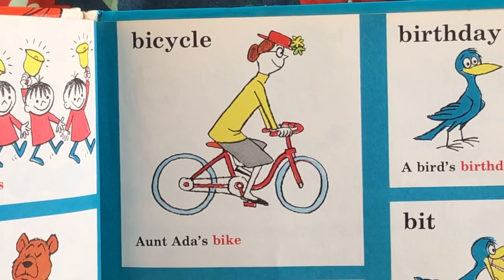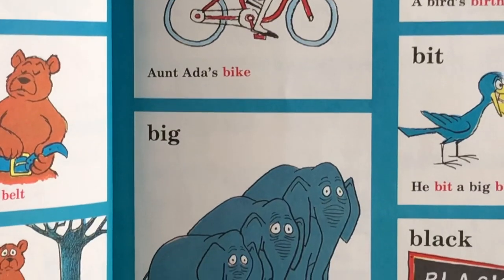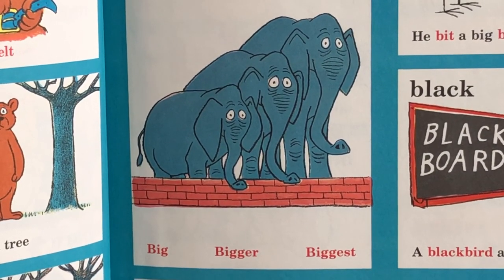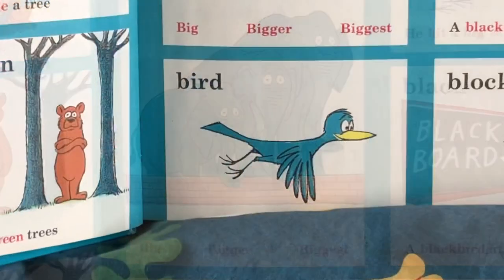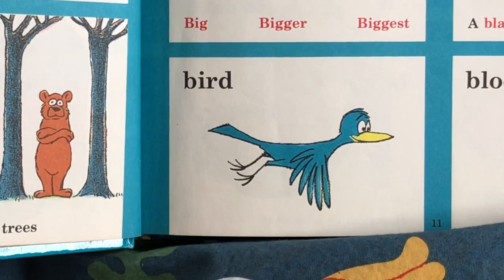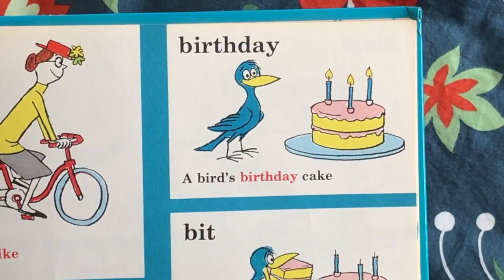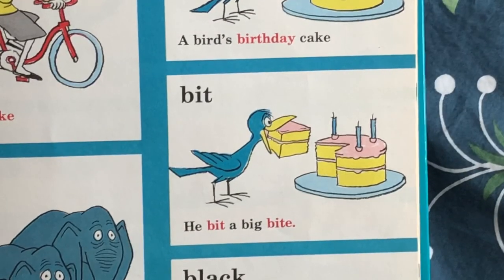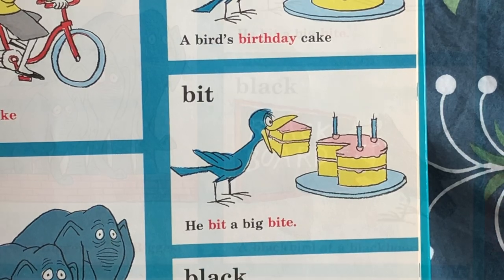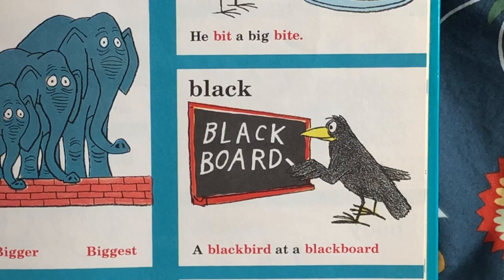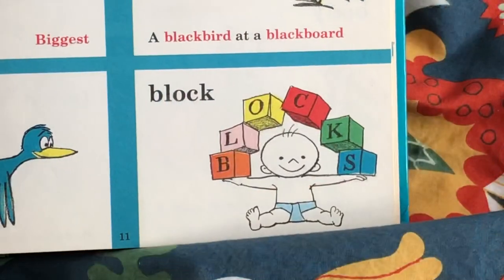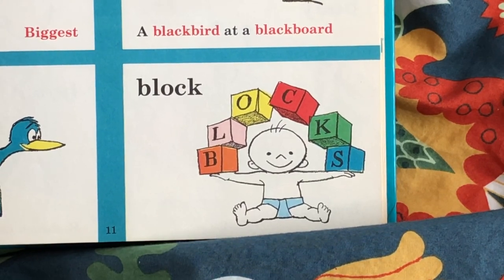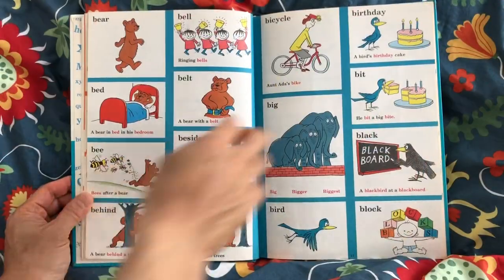Bicycle — Aunt Ada's bike. Big. Big, bigger, biggest. Bird. Birthday — a bird's birthday cake. Bit — he bit a big bite. Black — a black bird at a blackboard. Block — B-L-O-C-K-S. Blocks. Okay, we're off to the next page.